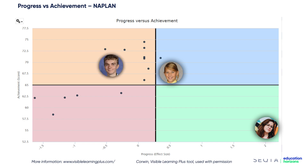This is Sam, falling into the orange area. Sam is a really able student but has obviously been having a lovely time — has made no real progress at all but is still doing really well. And then this is Sarah, who has not made the progress and has not shown the achievement you would be wanting for her year level. You can see that this visible learning tool is really useful for looking at students' progress versus achievement, and you can use it for all of your standardized testing data.